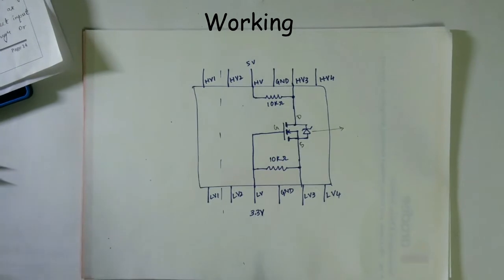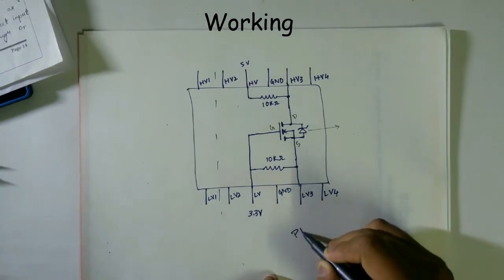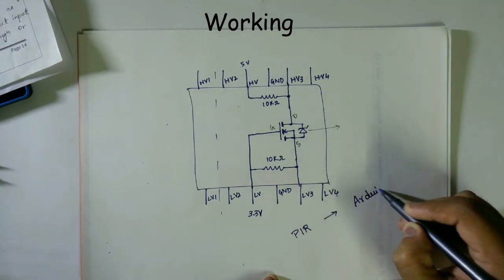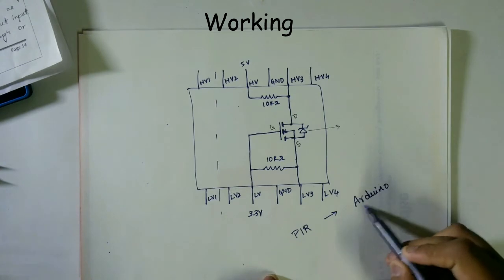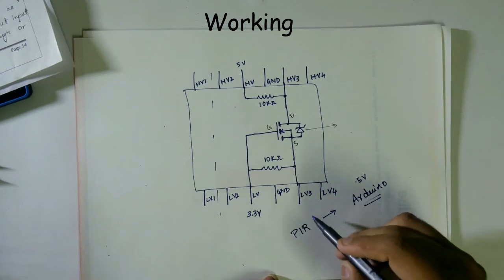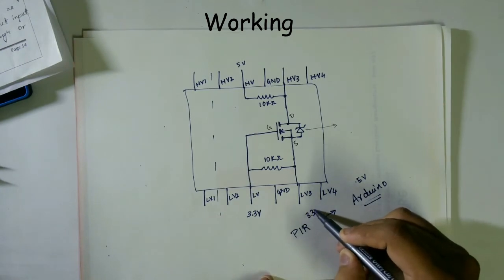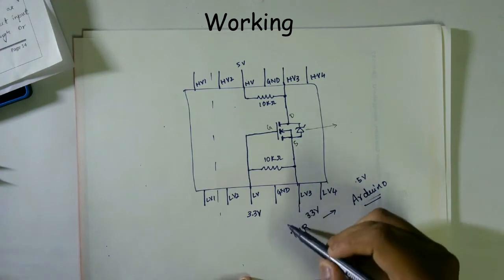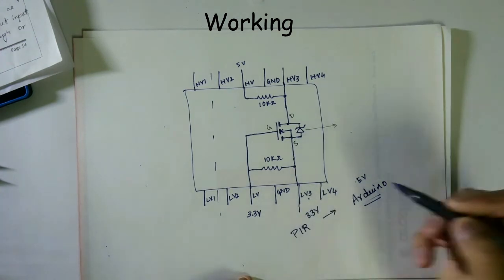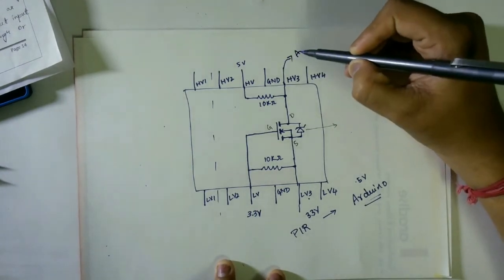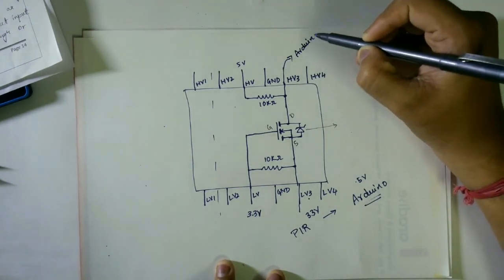And for example a PIR sensor and Arduino. If you want to interface these things, Arduino pins accept 5 volts. PIR sensor gives output as 3.3 volts. So let's assume you have connected the output of PIR sensor to LV3 and this HV3 to any one of the Arduino pin.